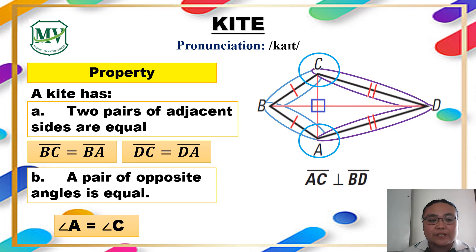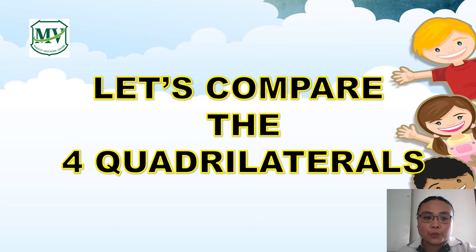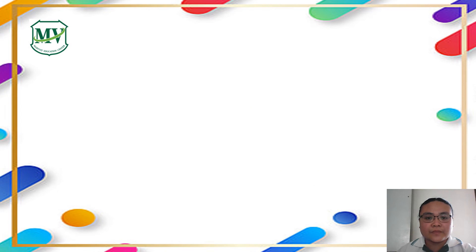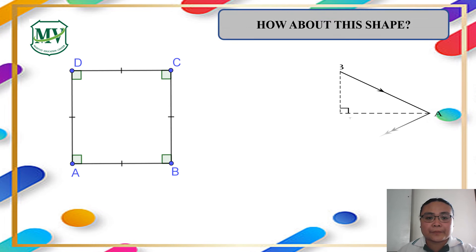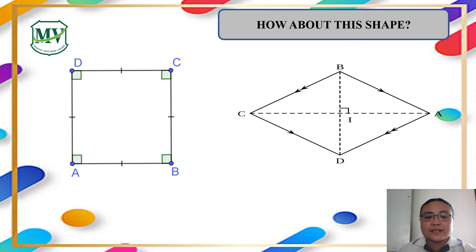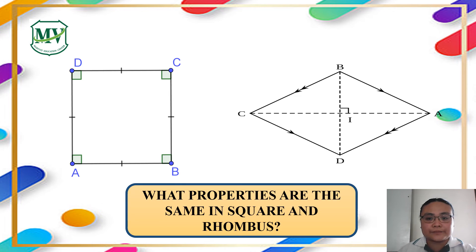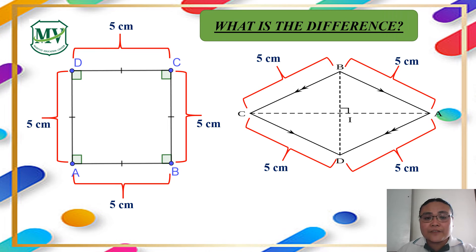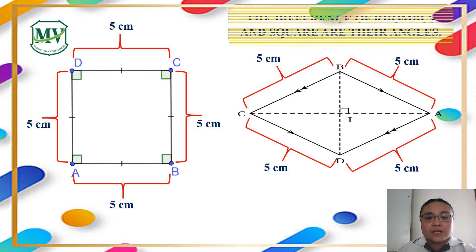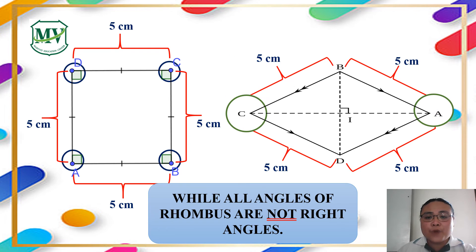Now we're done with the properties of quadrilaterals. Let's check your learning — let's identify and compare four quadrilaterals. What do you call this shape? It is a square. How about this shape? It is a rhombus. What properties are the same in square and rhombus? All the sides of the square and rhombus are equal. What is the difference between the two? The difference is their angles: a square has four right angles, while the angles of a rhombus are not right angles.